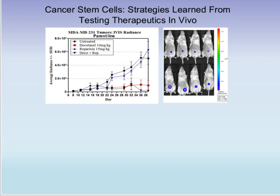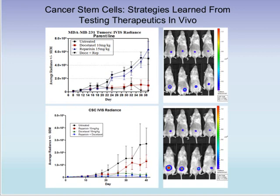We orthotopically implanted the heterogeneous 231 cells into the mammary fat pad and subjected them to various treatments. Treatment with reparixin alone as a single agent is not as efficacious as docetaxel or the combination of docetaxel with reparixin, which resulted in almost complete tumor regression. We then enriched cancer stem cells from the parent line using positive selection with CD44 microbeads, injected a more purified population of cancer stem cells, and examined responses to the same treatments.